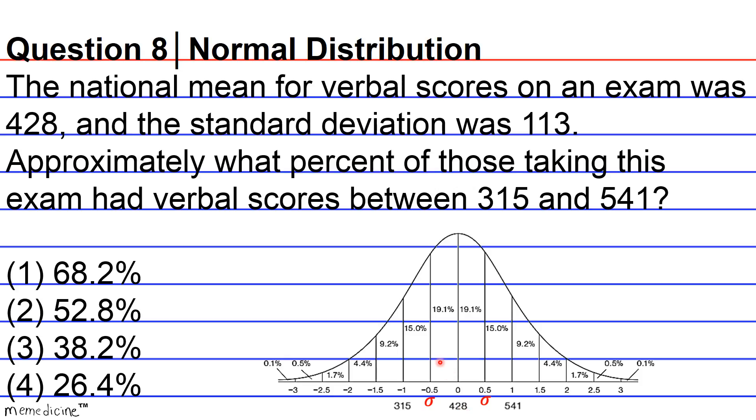So if you do a visual scan of the percentages that lie between 315 and 541, you're going to notice that they're between negative one and one standard deviation away from the mean. So we've gotten our correct range.